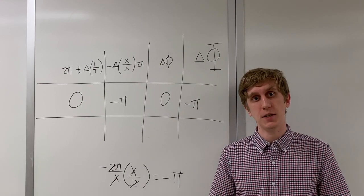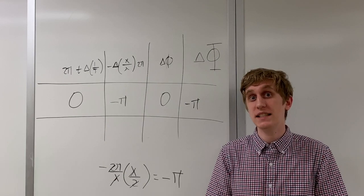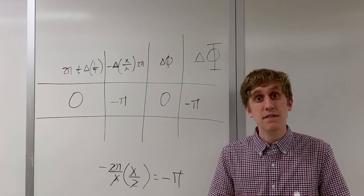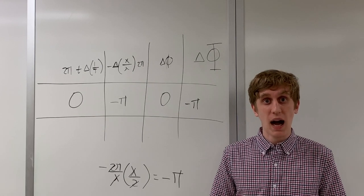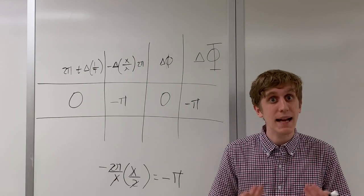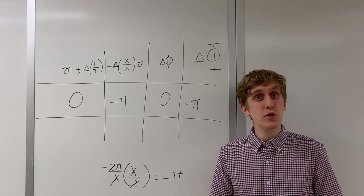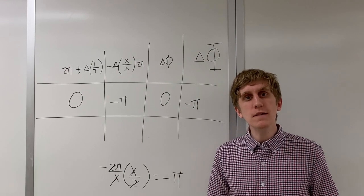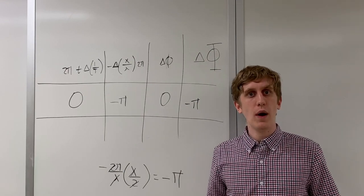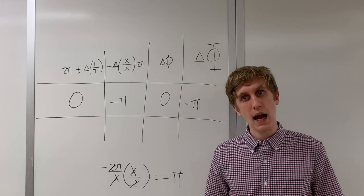Destructive interference appears when the difference in phase is pi, 3 pi, 5 pi, or negative pi, negative 3 pi, negative 5 pi, etc. This matches with what we heard. When we moved the speaker closer by half a wavelength, the intensity of the sound went down.